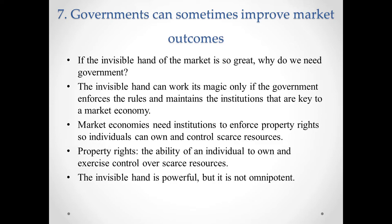A farmer won't grow food if he expects his crops to be stolen. A restaurant won't serve meals unless it is assured that consumers will pay before they leave. We all rely on government-provided police and codes to enforce our rights over the things we produce. The invisible hand counts on our ability to enforce our rights. The invisible hand is powerful, but it is not omnipotent, and so there is another reason we need government.